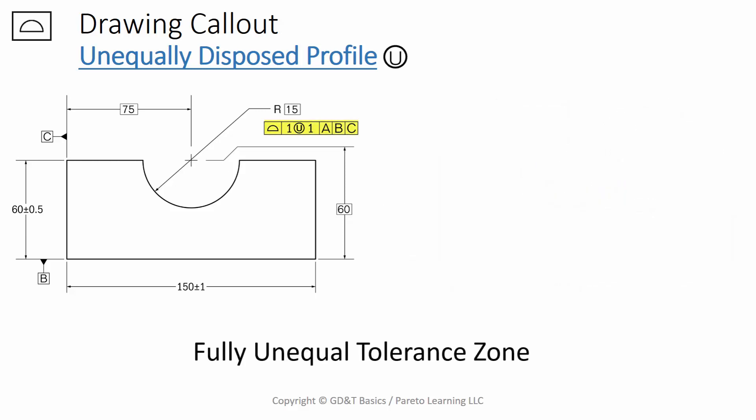Now we can also have a fully unequal tolerance zone. So if we have a 1 to the left of the U, and a 1 to the right of the U, what do you think that means? Well, it means our profile exists entirely on the outside of the true profile. You're using basic dimensions to control the radius of 15, but this means that your profile exists all the way outside of your part.